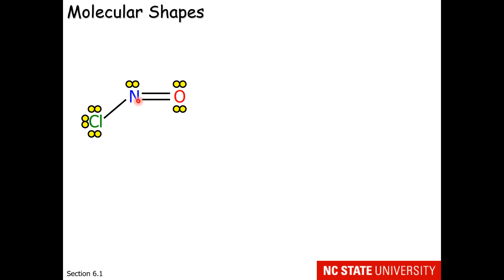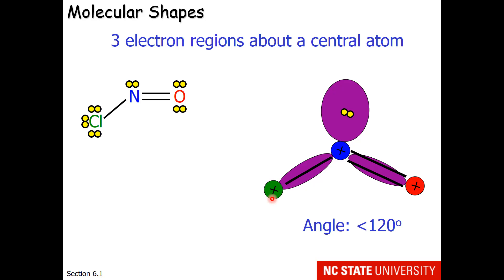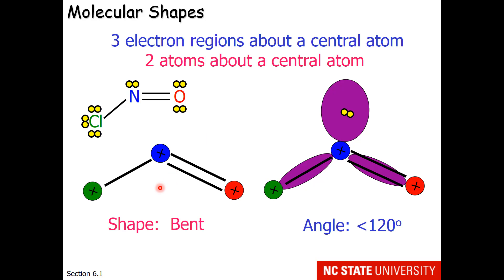This nitrogen also has three electron regions around it. It has a lone pair, a single bond, and a double bond. But what's different is that the previous structure had an atom, an atom, and an atom. This one has a lone pair, an atom, and an atom. So that's going to change the structure slightly. First off, the angle between the chlorine, the nitrogen, and the oxygen is close to 120 degrees, but it's slightly smaller. It might be something like 118 degrees. That's because this lone pair occupies more space than the electrons that are tethered at two ends with a bond. This has the effect of crunching the angle down between the atoms. The shape of this is bent. We call this bent at an angle near 120 degrees.